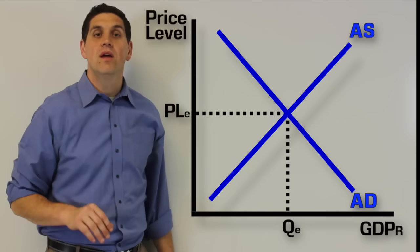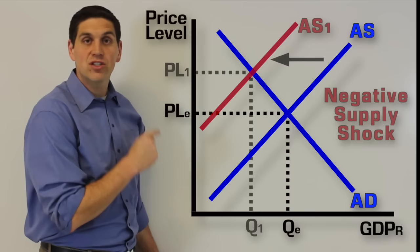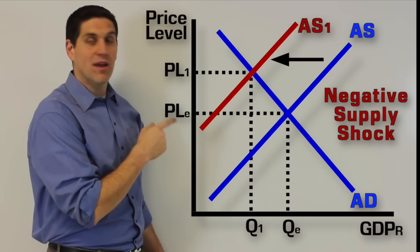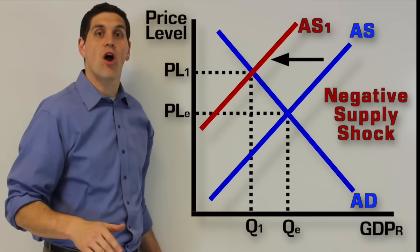Now what about supply? If we were back at equilibrium and there's a decrease in the amount of oil that we have, that would cause the aggregate supply to shift to the left. This means price level would go up and quantity would go down. It turns out that this is the worst case scenario in the economy, and it's called stagflation.